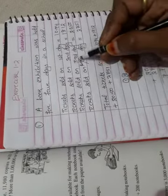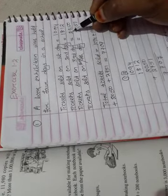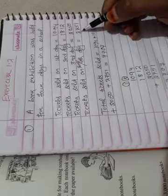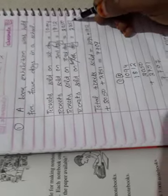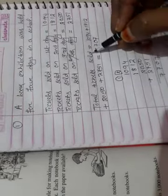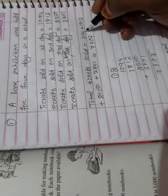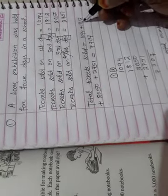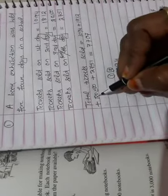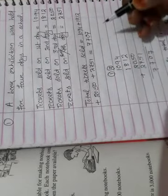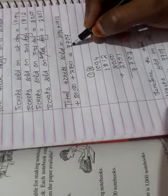Tickets sold on third day is equal to 2050 and tickets sold on final or fourth day is equal to 2751. Total tickets sold on fourth day is equal to 1094 plus 1812 plus 2050 plus 2751 is equal to 7707.